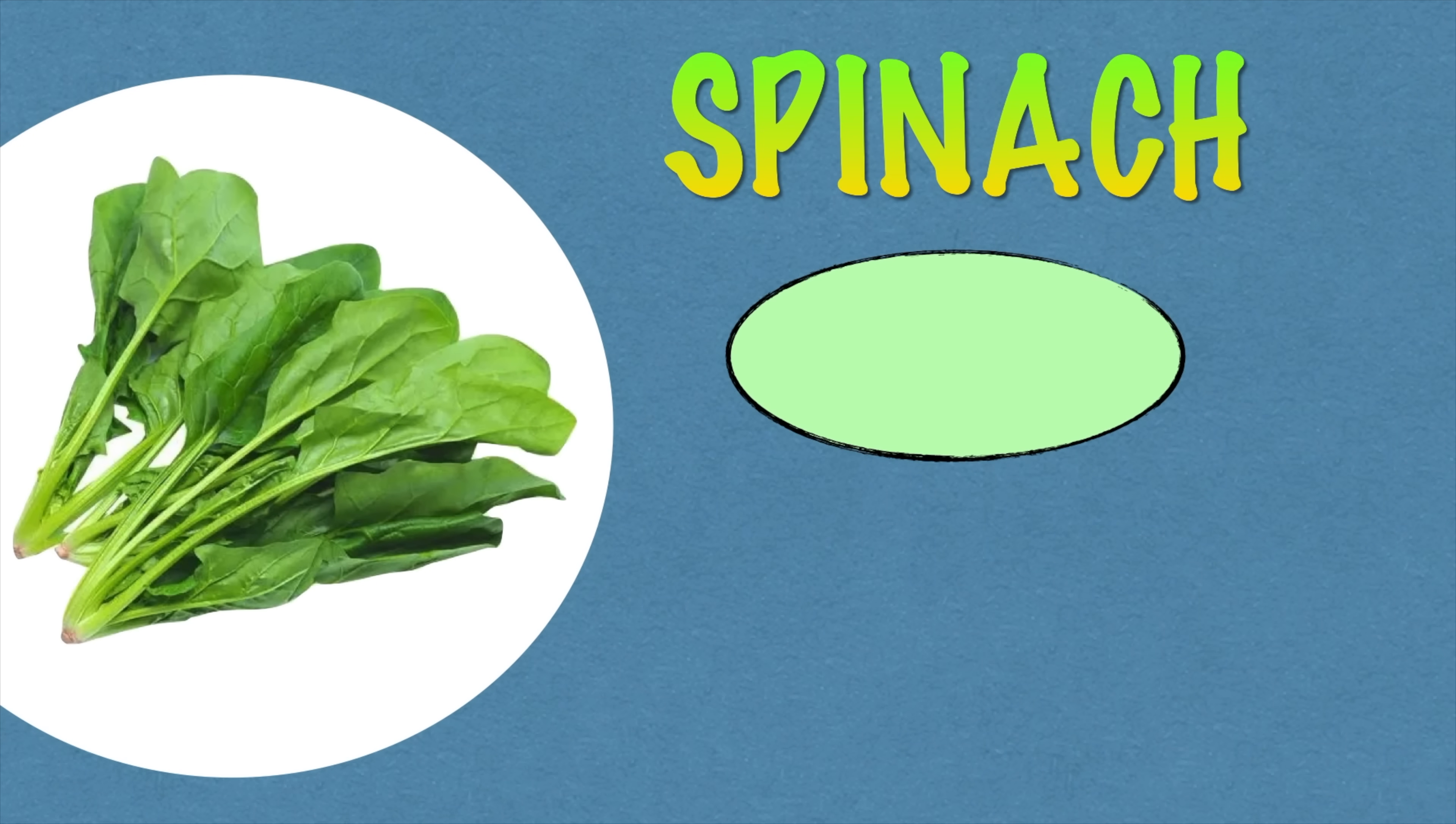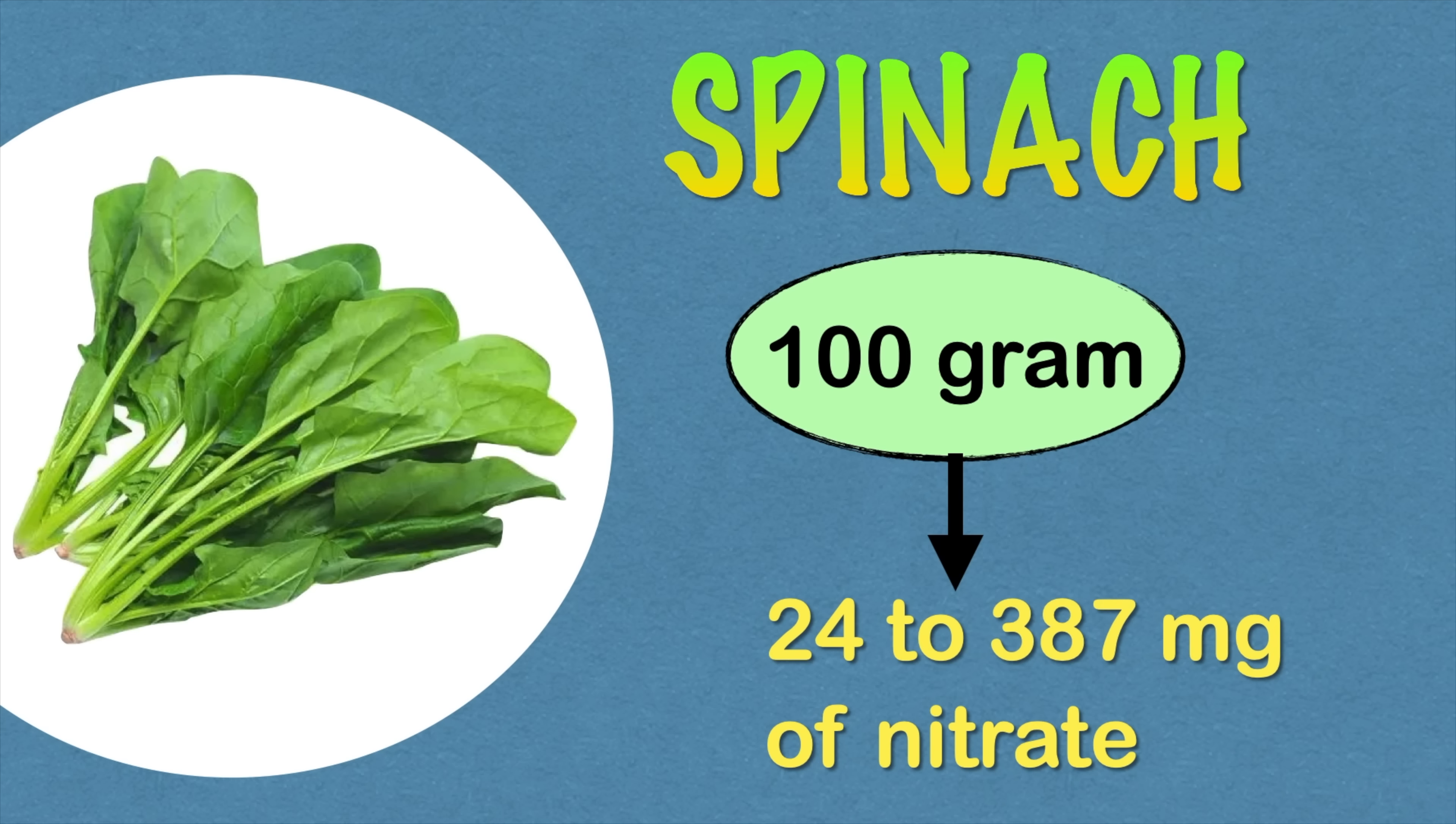Now let's discuss some foods which are high in nitrates. Spinach is not just a great addition to salads but also a great source of natural dietary nitrates. A 100 gram serving of fresh spinach contains anywhere from 24 to 387 mg of nitrates. This amount varies widely depending on growing conditions.